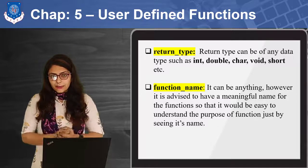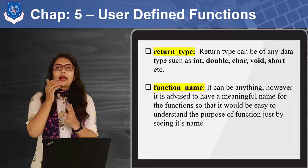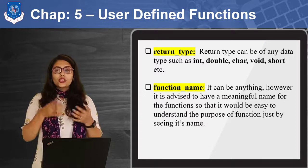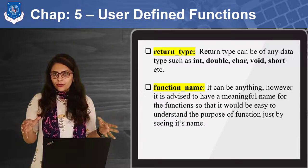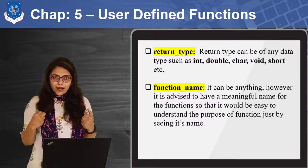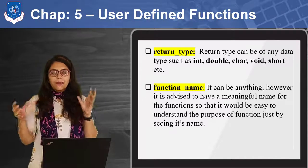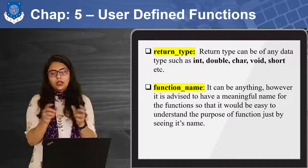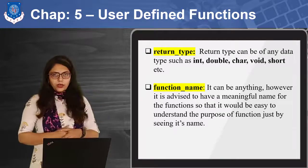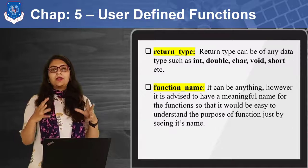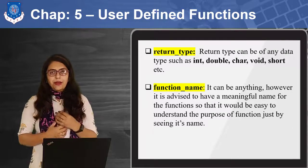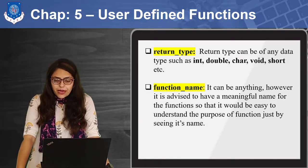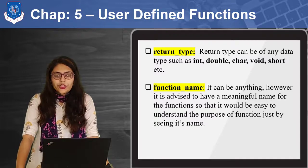Suppose I am writing a function to add two numbers — I am expecting an integer output because I am adding two integers. So the return type of the addition function would be int. Suppose I am dividing numbers — then I might expect a float output. So return type can be any data type such as integer, double, character, void, short, etc.